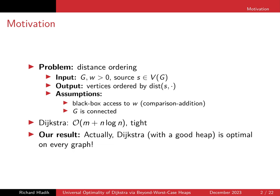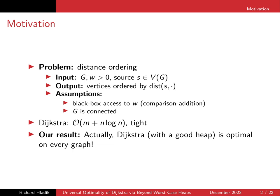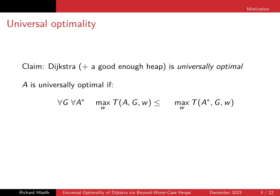Formally, we say that Dijkstra is universally optimal. An algorithm is universally optimal if, given a graph but not the weights, and given any correct algorithm that knows this graph, then my algorithm is universally optimal if the worst-case running time of my algorithm on this graph, given unknown weights, is competitive with the worst-case running time of your algorithm on this graph — up to some constant.